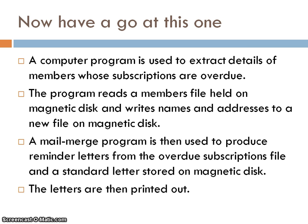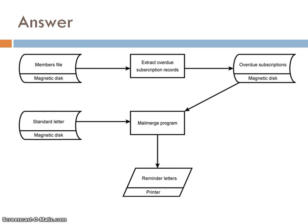Okay, the video is playing again. So if you don't want to see the answer, pause again now. Here is the answer. And this shows the solution flowchart to that problem we have just previously looked at. Members file on the magnetic disk. The details are extracted from there. We extract overdue records subscriptions.